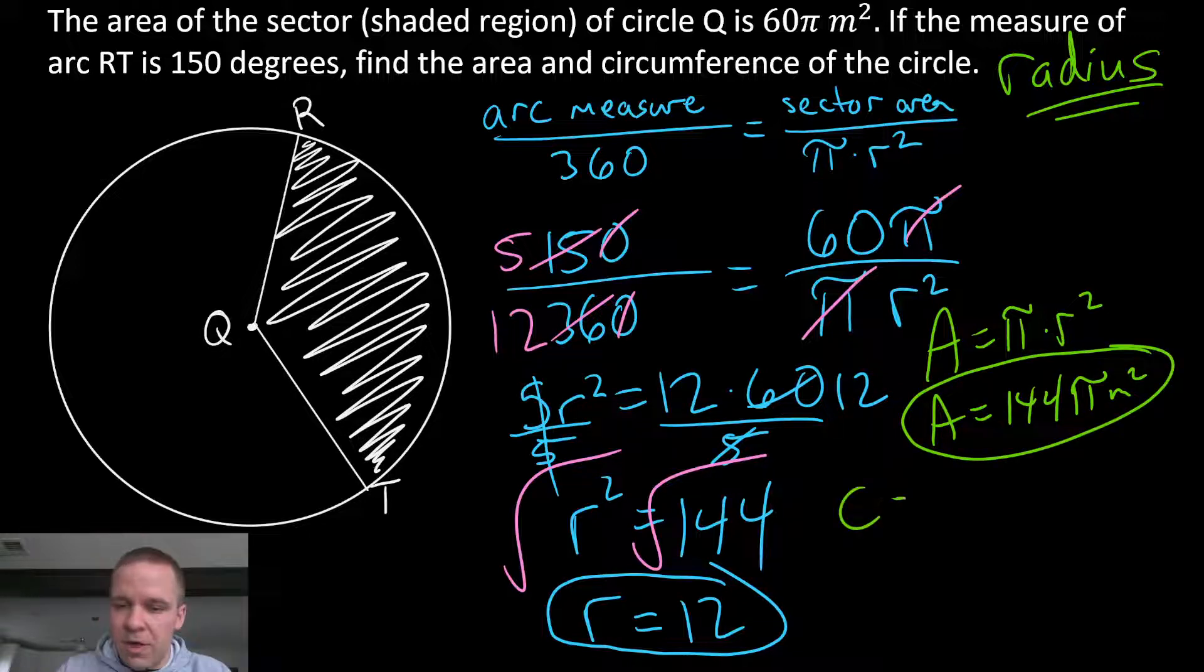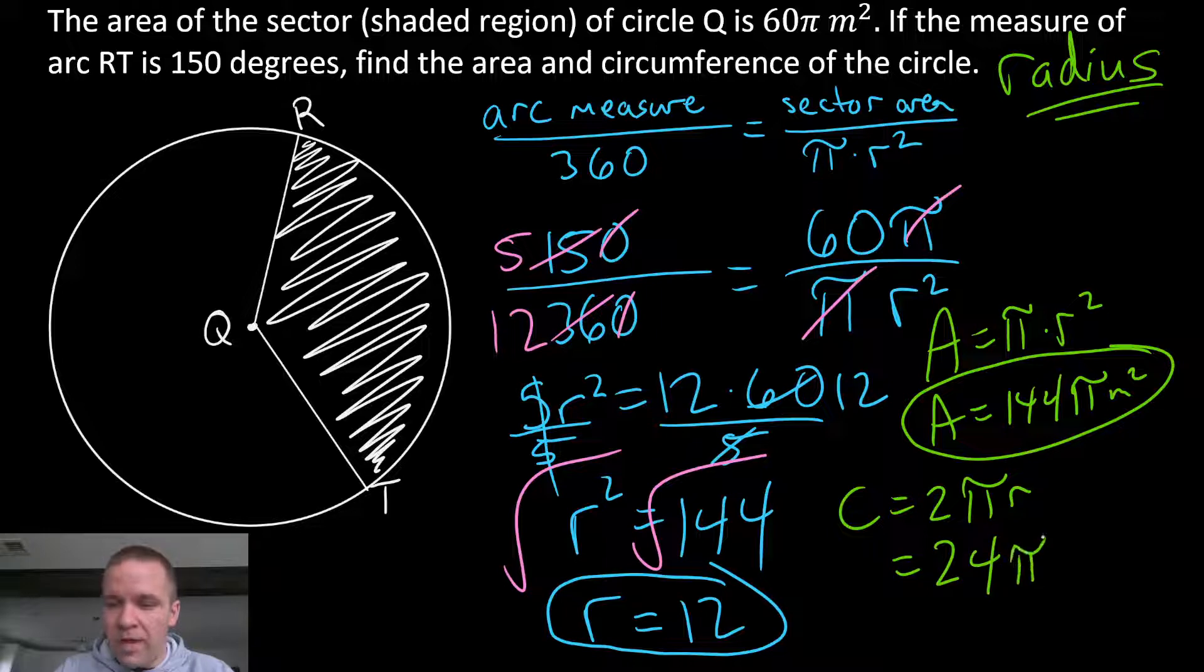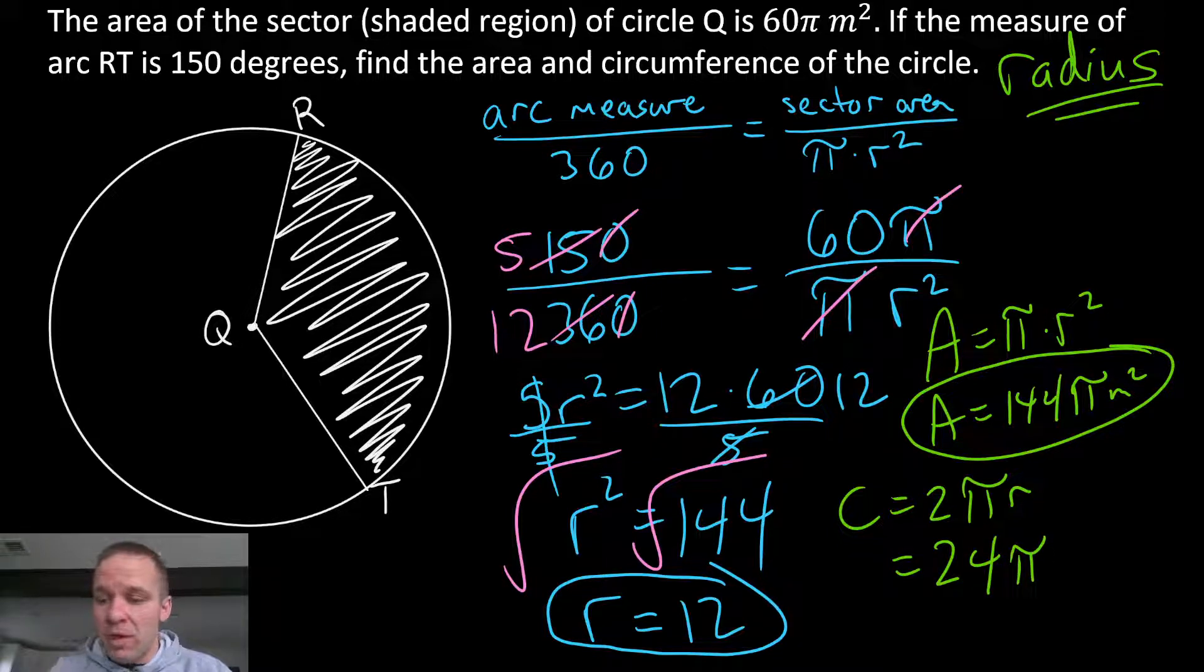How about my circumference? Circumference is 2πr, or π times diameter. So I'm gonna have, let's see here, two times 12 is gonna give me 24π, and this is not units squared. It's just going to be meters. There's my circumference.